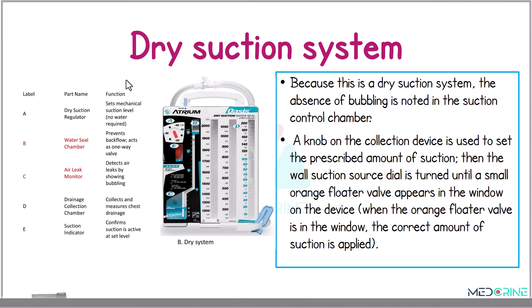Looking at the parts of a dry suction system: we have a dry suction regulator on one side; a water seal chamber labeled B, which prevents backflow and acts as a one-way valve; an air leak monitor, which detects any air leaks by showing bubbles; a drainage collection system where we collect and measure chest drainage, just like a wet suction system; and lastly a suction indicator to confirm that suction is active at the set level.